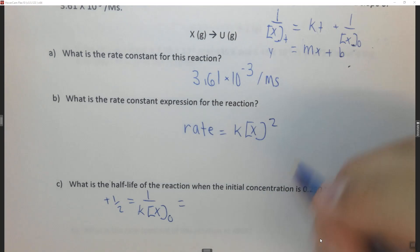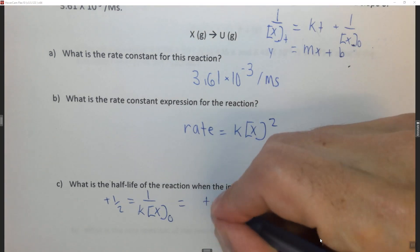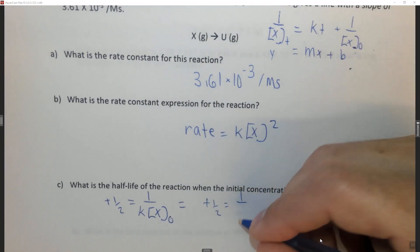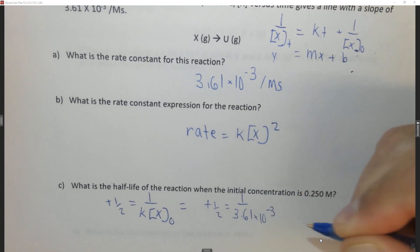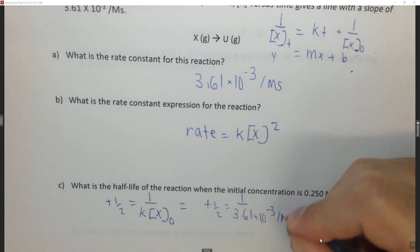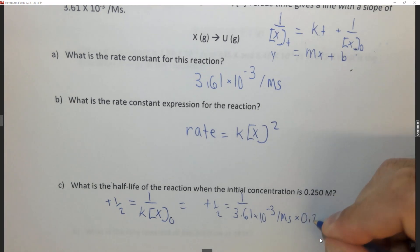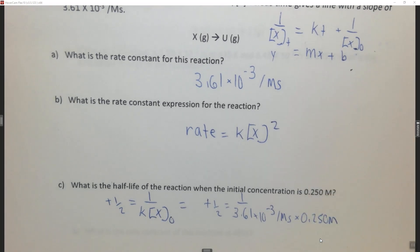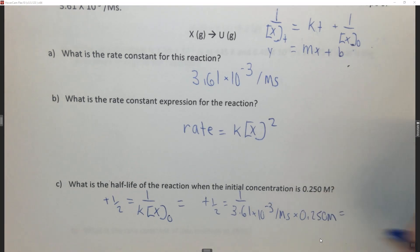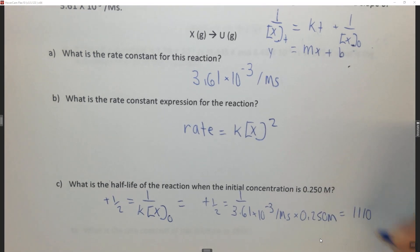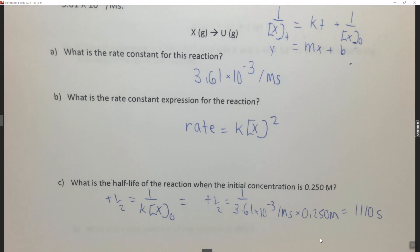So in this case we just found k, so t₁/₂ equals 1 over k, which is 3.61 × 10⁻³ per molar second, times the initial concentration, which is 0.250 molar given in the problem. And when we do that math we find to four significant figures it's 1110 seconds is the half-life of this reaction.